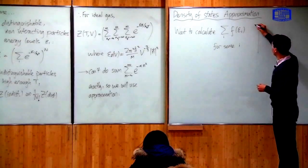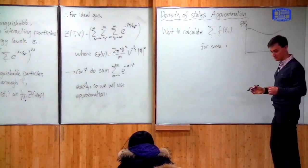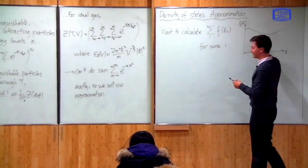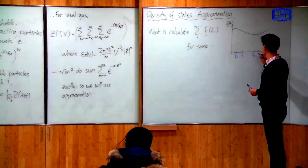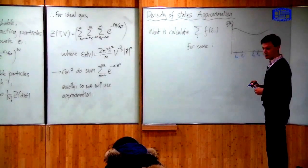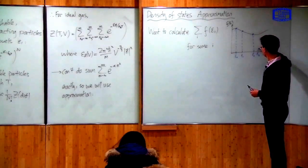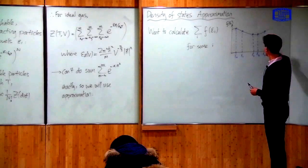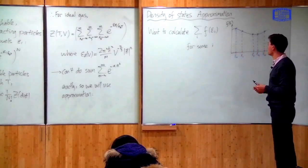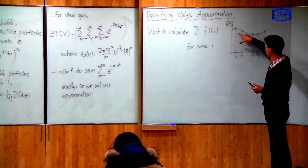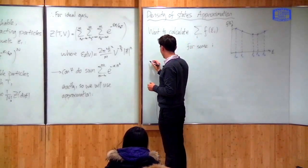If I draw it as a graph of the function f of ε against ε, suppose that this function looks like something — in fact it's an exponential decay. Then there are certain energy levels ε_0, ε_1, ε_2, ε_3, ε_4 and so on. For each of these energy levels I take the value of the function and I add it up. So what you do in this sum is take the values of the function at each of these points and add them all up. This should remind you of the picture of what you do when you calculate an integral.